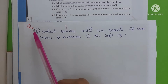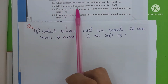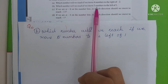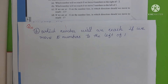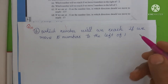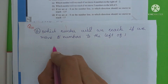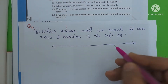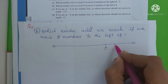Coming to part B. The question is: which number will we reach if we move 5 numbers to the left of 1? So again we make a number line. We plot 0, then 1, 2, 3.